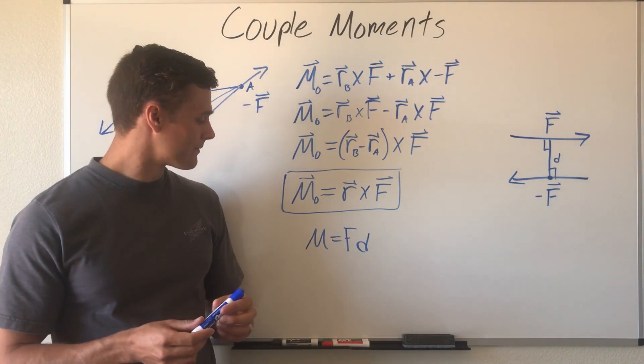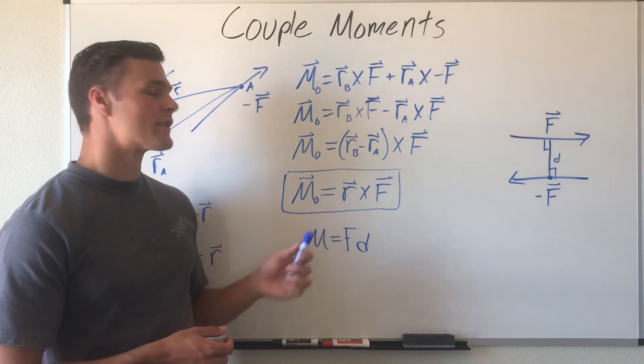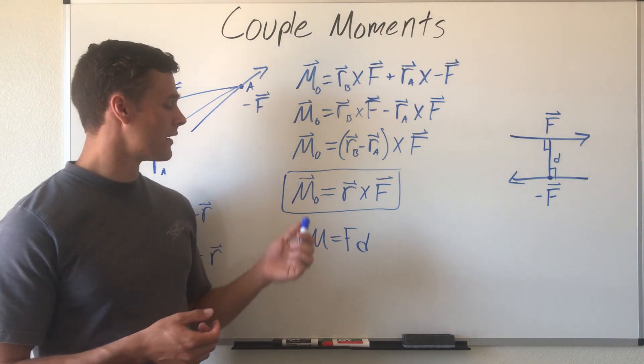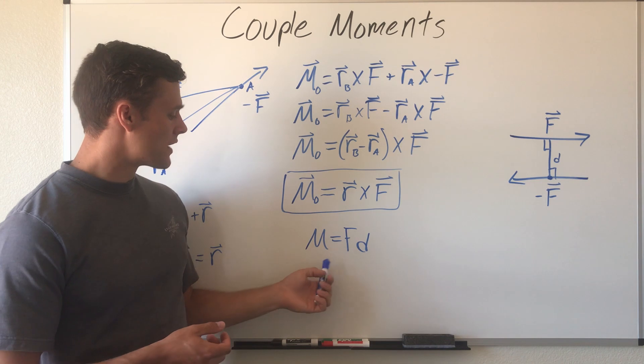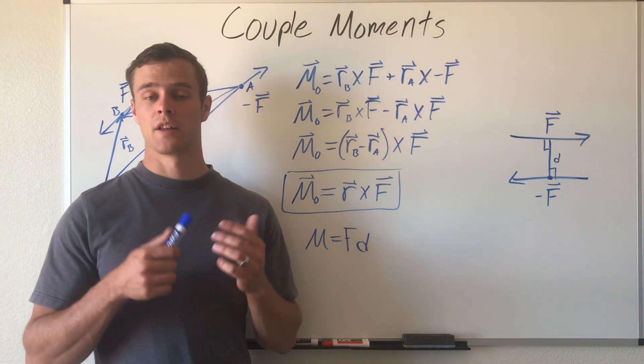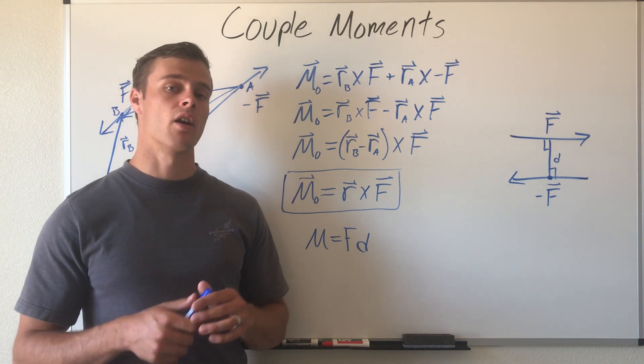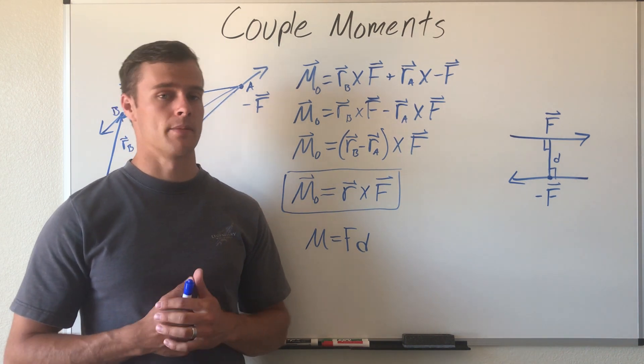Remember that while you can add vectors to find your resultant moment vector, you cannot add the magnitude of your moment up unless your moments are going all in the same direction, or in other words they're all rotating along the same axis.